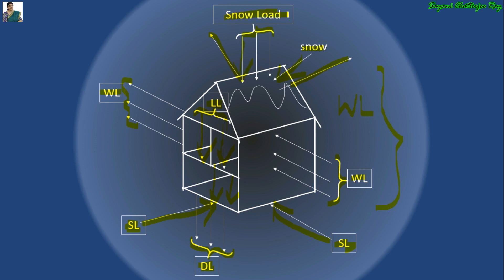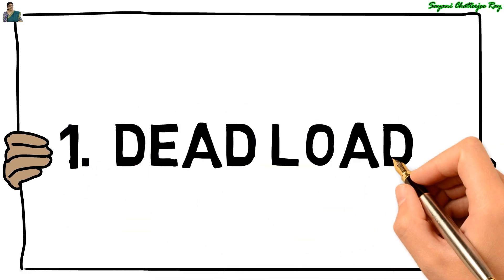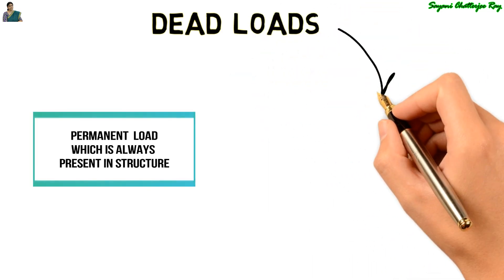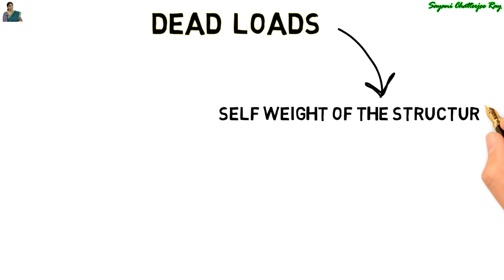For the structures which are located in the region where snowfall is common, you have to also consider the snow load. The first one is dead load. Dead load of any structure is a permanent load which is always present in the structure. It is due to the self-weight of the structure itself.